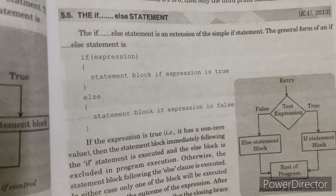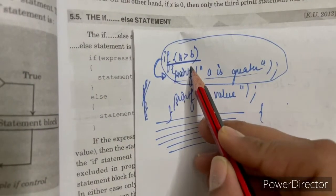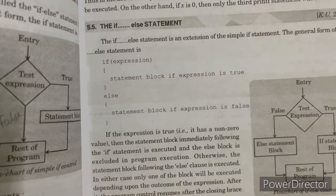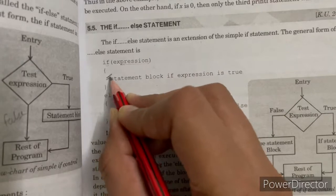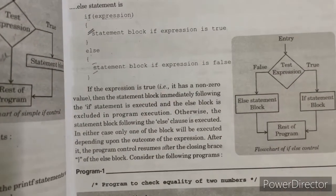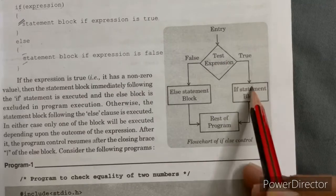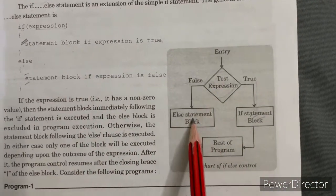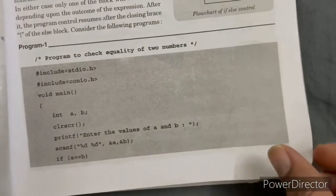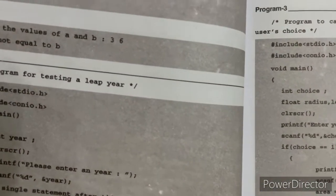Next is the if-else statement. It was the if, but now we have given its else. If the condition is true, then the if block will be done. But if it is false, then it will come to the else block and that will be done. In the flowchart: entry, we test the condition. If it is true, the true block executes. If it is false, it comes to else and the else block executes. Then the rest of the program continues. There are some examples given — example number one you can read on your own, example number two we will discuss later.